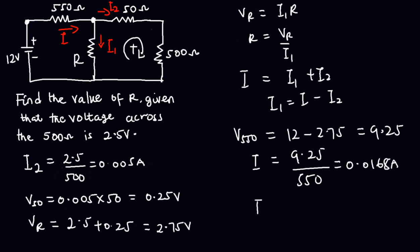Now we can find I1, which will be equal to I minus I2: 0.0168 minus 0.005. So I1 equals 0.0118 Amperes.